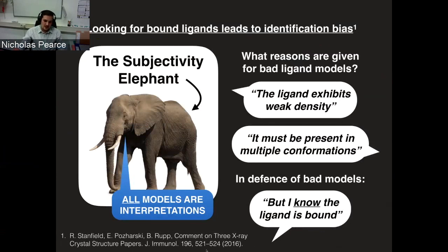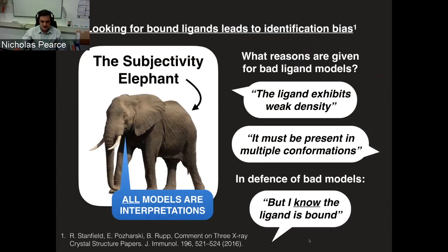A fairly recent extreme example is the paper by Stanfield-Pasarsky and Rupp, which investigated a few PDB structures containing a peptide that did not actually appear in the electron density. This led to an argument in the literature about how we should interpret difference maps. The methods that identify ligands in electron density are still subjective — people decide what the appropriate contour level is. So we have real problems there.